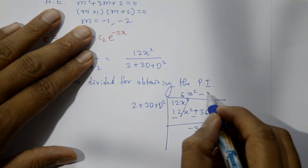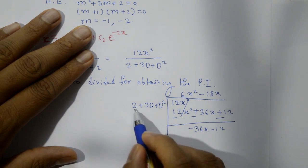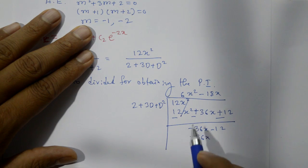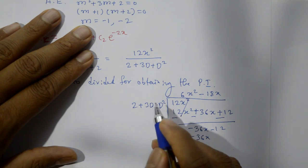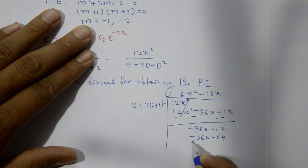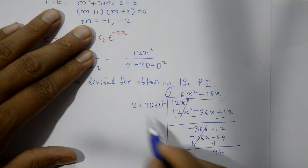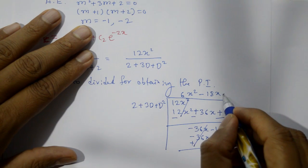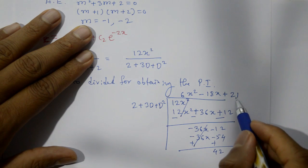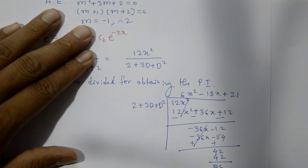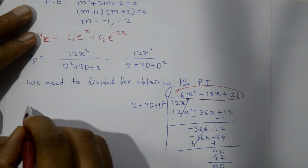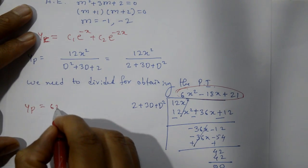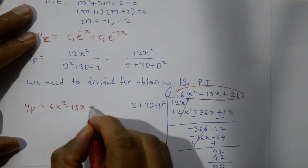Next quotient term: −36x / 2 = −18x. Multiply −18x by 3D: differentiate x once, giving 18 × 3 = 54 — change sign gives +54. Then 42 remains; quotient term 42/2 = 21. So the particular integral is yp = 6x² − 18x + 21.